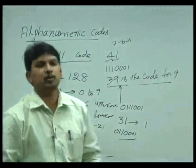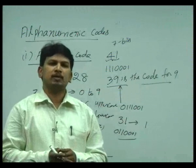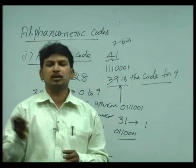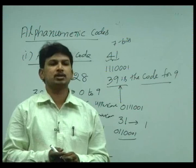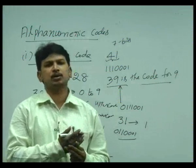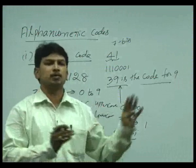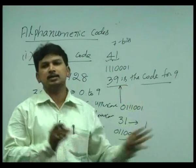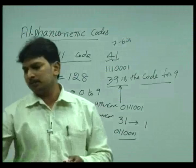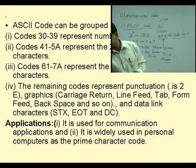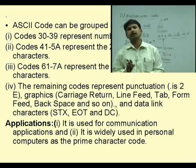ASCII code is very, very important as far as a personal computer is concerned. The personal computer is the most widely used even nowadays for data communication purposes. Wherever we see, in commercial applications like banking systems, air reservation systems, or train reservation systems, we use this ASCII code only for communication purpose, for data communication.